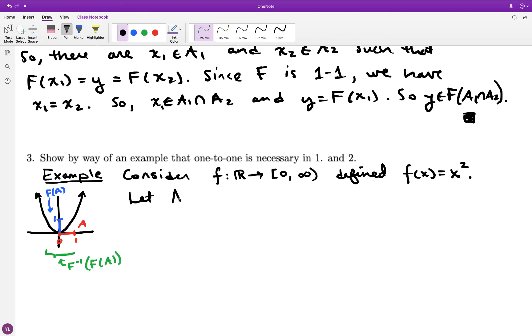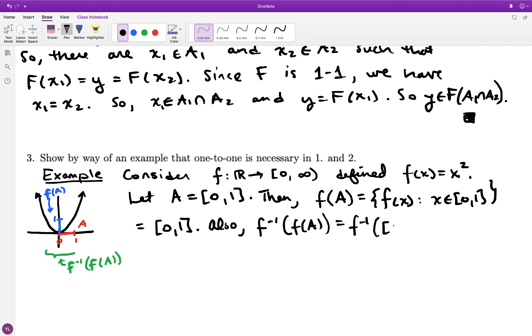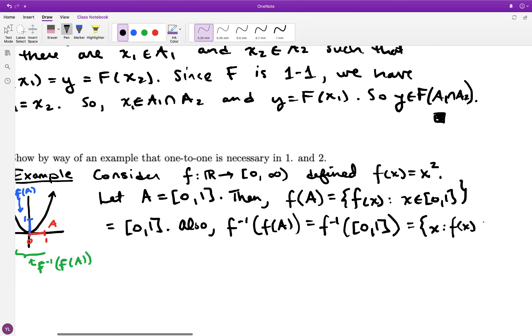So f inverse of f(A) here is going to extend all the way from negative one to one. So writing this out in more detail, if A is zero to one in the domain, then f(A), the image of that set, is going to be all the numbers in the codomain from zero to one, all the squares of the numbers in A. But if you look at the pre-image of zero one, anything that is in between negative one and one gets mapped into zero one. So the f inverse of f(A) ends up being all of the numbers between negative one and one, which is a bigger set than the original set A.